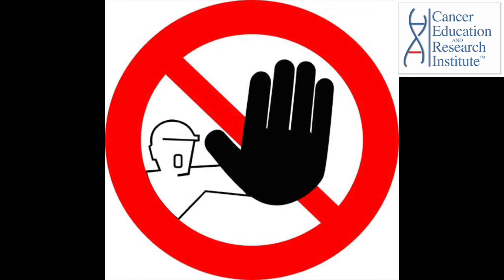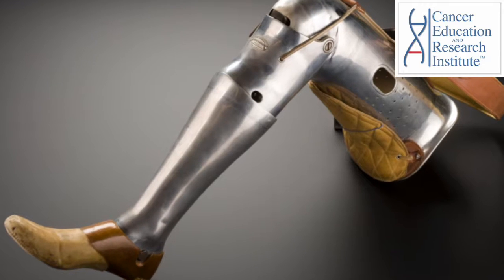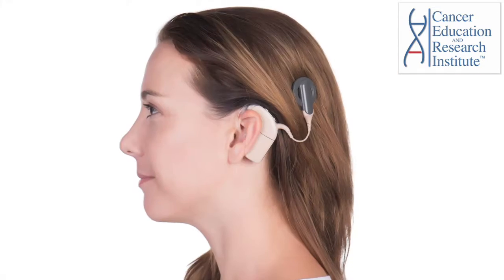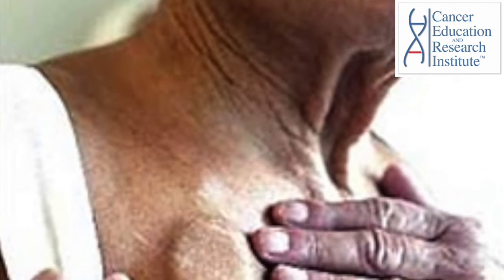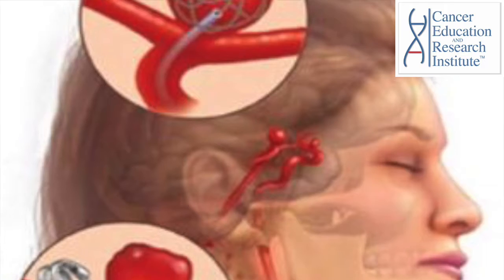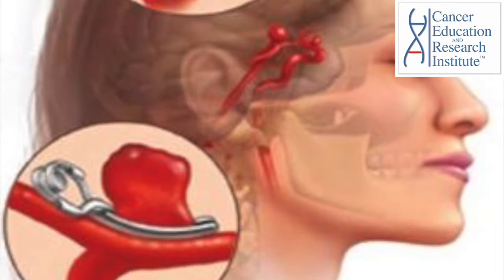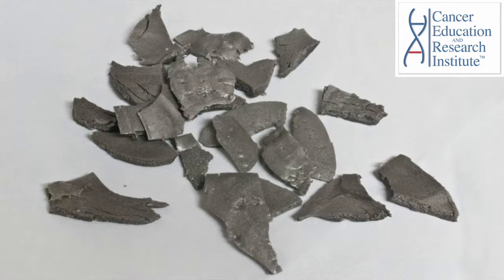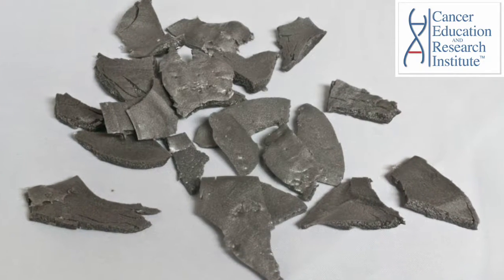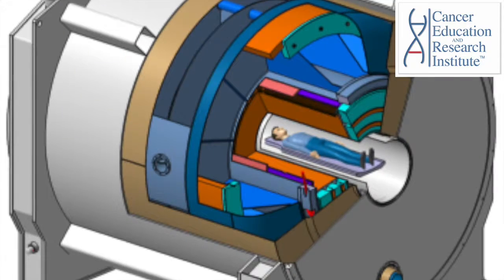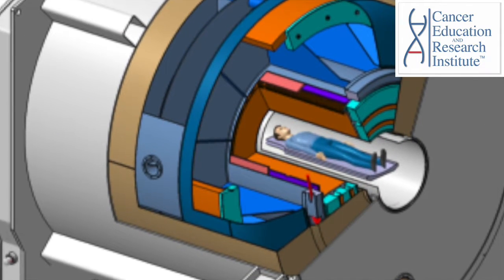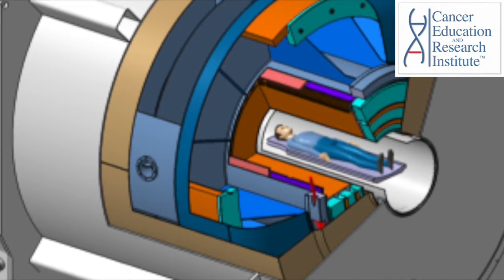However, MRI is not recommended for persons who have metal prostheses, cochlear implants, cardiac pacemakers, aneurysm clips in the brain, or have or had foreign metal fragments in their eyes, as the metal can interact with the magnet of the MRI.